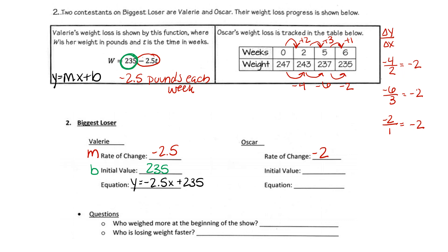Oscar is losing two pounds per week. His initial value is his starting point — he started at 247 pounds, because that's paired with zero. Using those two pieces of information, we write the equation: y equals negative 2x plus 247.